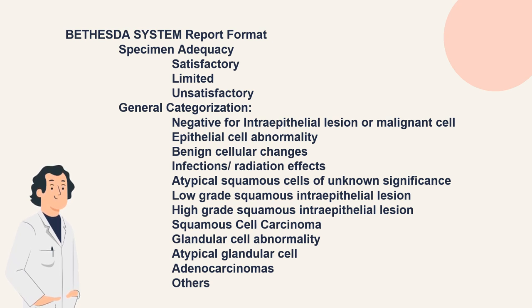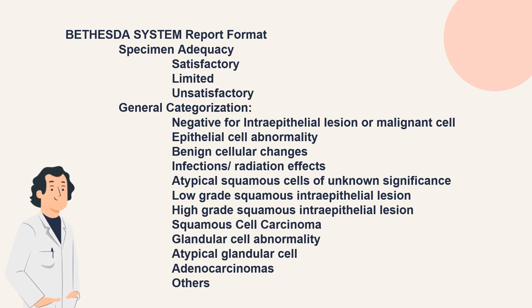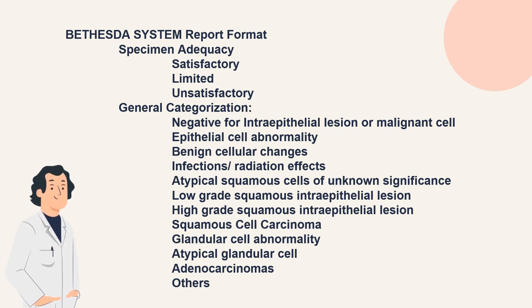The class system for reporting PAP smears, no longer used since December 1988: Class 1 = negative for malignant cells; Class 2 = atypical cells present but negative for malignancy; Class 3 = suspicious of malignant cells; Class 4 = strongly suggestive of malignant cells; Class 5 = conclusive of malignant cells. The Bethesda system, currently used and developed by the National Cancer Institute in December 1988, includes specimen adequacy categories (satisfactory/unsatisfactory/limited), and general categorization: negative for intraepithelial lesions or malignancy, epithelial cell abnormality, benign cellular changes, infections or radiation effects, atypical squamous cells of undetermined significance (ASCUS), low-grade squamous intraepithelial lesion, high-grade squamous intraepithelial lesion, squamous cell carcinoma, glandular cell abnormality, atypical glandular cells, and adenocarcinoma.